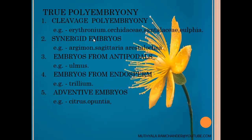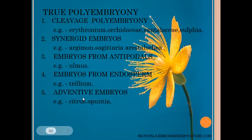Sometimes synergids also develop into embryos — examples include Argemone, Sagittaria, and Aristolochia. Embryos can also develop from antipodals; the example plant is Almas. Sometimes embryos develop from endosperm, which is the nutrient tissue — the example plant is Trillium. There is also adventive polyembryony, found in Citrus and Opuntia. All these types belong to true polyembryony, meaning these polyembryos are capable of developing into a plantlet.